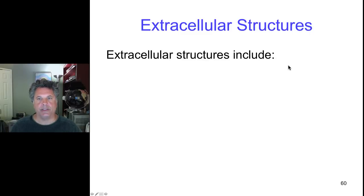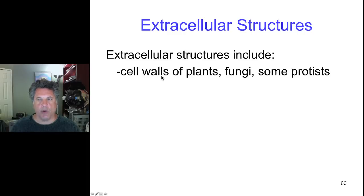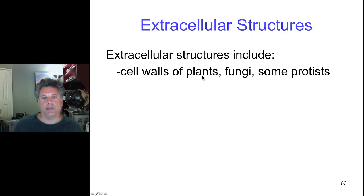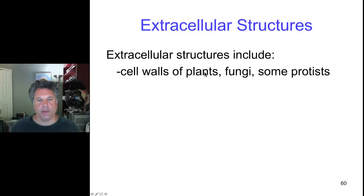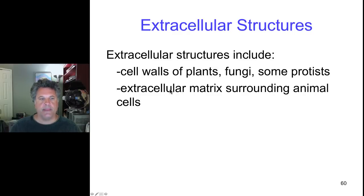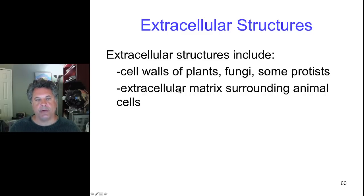When we consider extracellular structures as part of the cell, we need to include the cell walls of plants. Fungi and some protists also have cell walls. Those cell walls can be made out of different compounds. The cell walls of plants consist of polymerized beta glucose, and that polymerized molecule is called cellulose. It's the most abundant organic molecule on earth because of all the cell walls that exist in plants. In animals, the extracellular structures are termed the extracellular matrix, or ECM. The extracellular matrix is secreted by cells and you often find complex extracellular matrices coating cell epithelia.